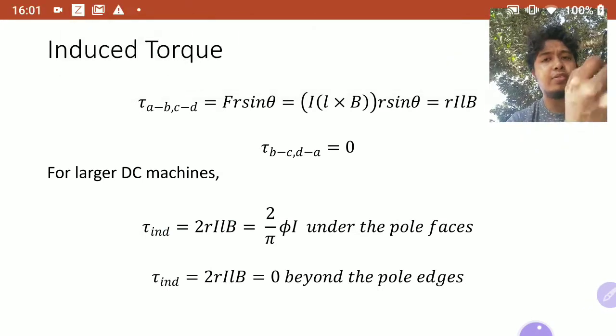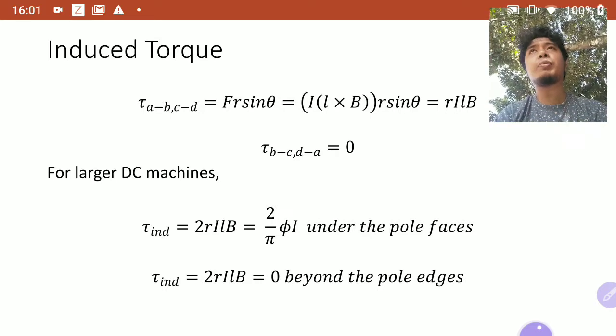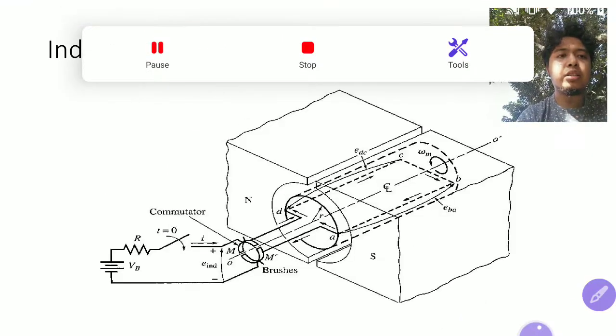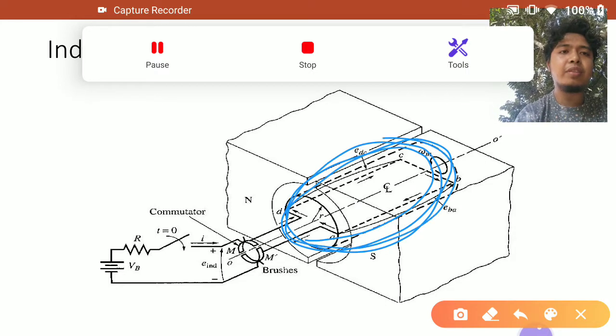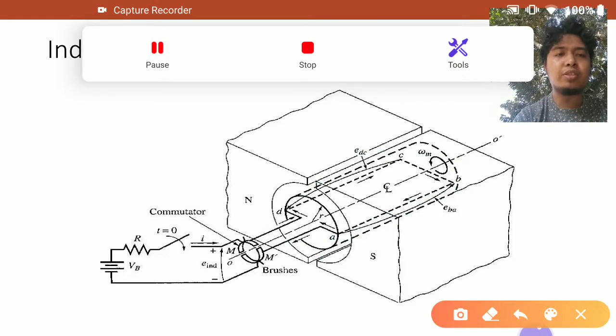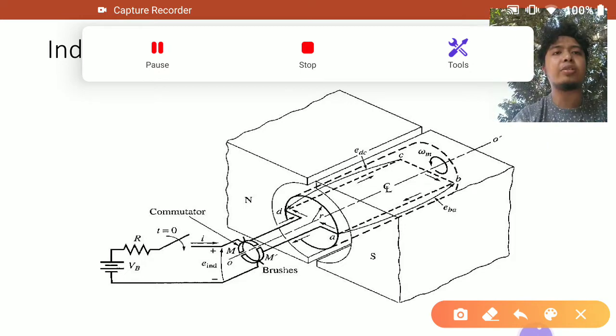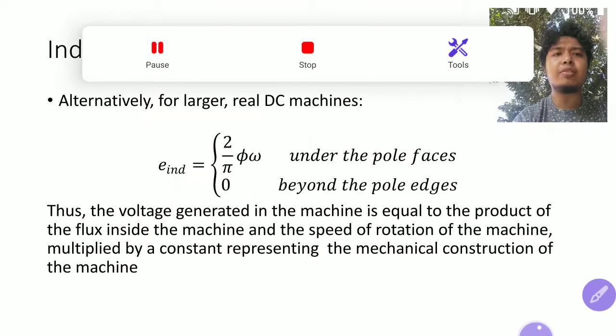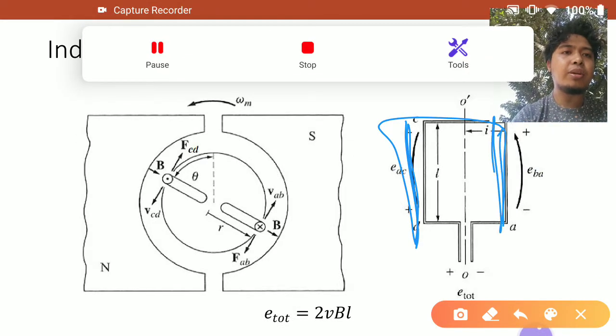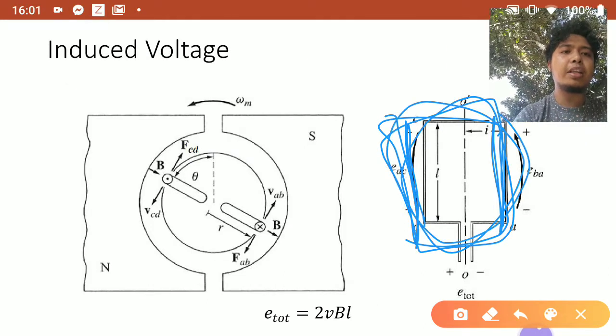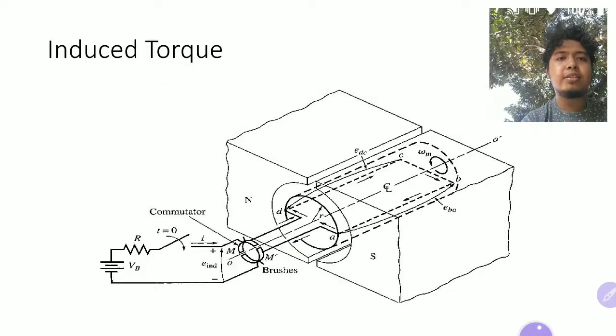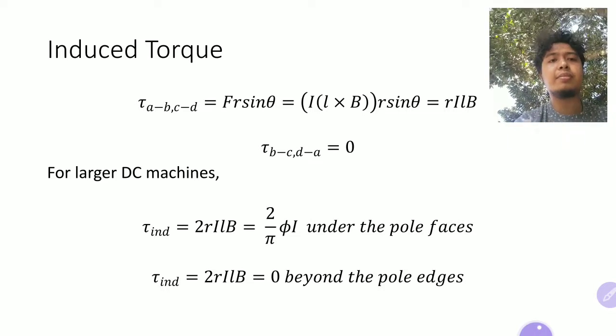Twice of RILB because you have two conductors. Of course, if you have N number of turns, then you don't multiply it by two, but you multiply it by N. For every turn, you have two active conductors, this one and this one. So if you have multiple turns, then you just multiply it by the number of turns. So it's 2N VBL for N number of turns. For torque, it is 2N RILB for N number of turns.